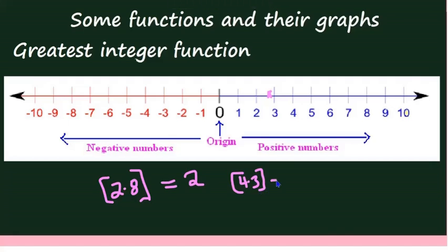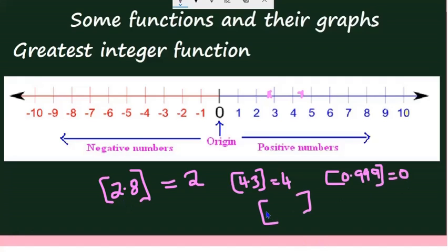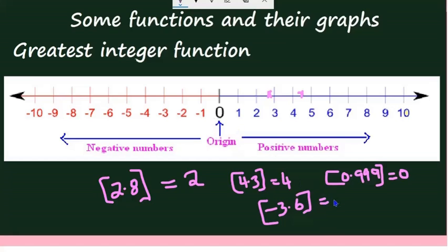What is ⌊4.3⌋? The number 4.3 lies between 4 and 5 on the number line. The greatest integer less than or equal to 4.3 is 4. So ⌊4.3⌋ = 4. What is ⌊−3.6⌋? You might say −3, but that is incorrect. Since −3.6 lies between −4 and −3, the greatest integer less than or equal to −3.6 is −4. So ⌊−3.6⌋ = −4.